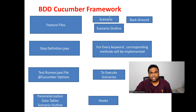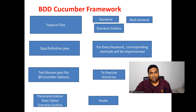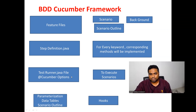In Scenario, the steps execute only once with predefined input values. In Scenario Outline, the steps execute multiple times for each set of input data as defined in the Examples section. In StepDefinition.java, corresponding methods are implemented for every keyword. TestRunner.java contains @CucumberOptions to trigger and control scenario execution.